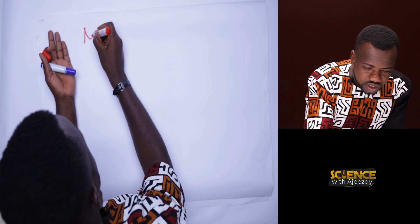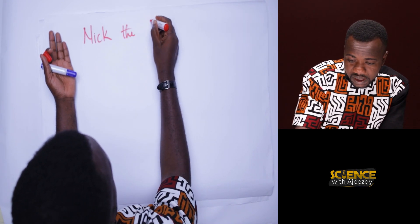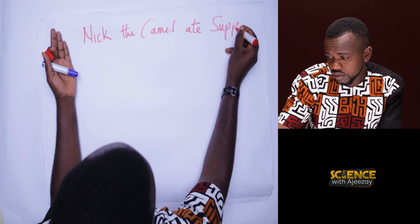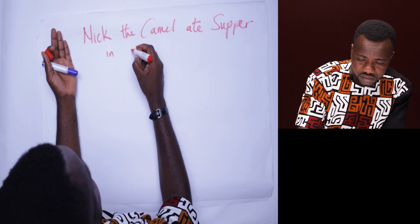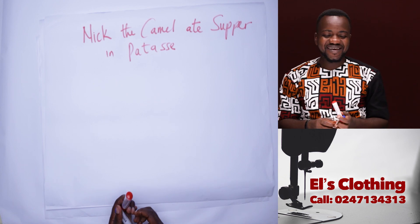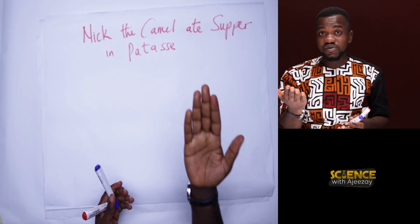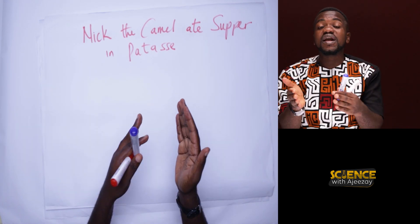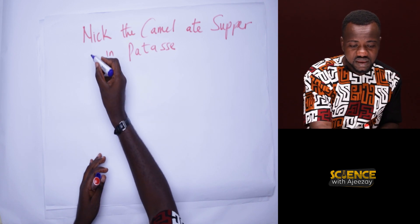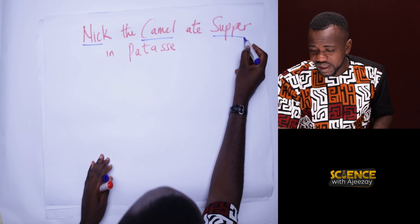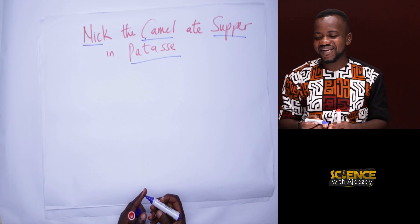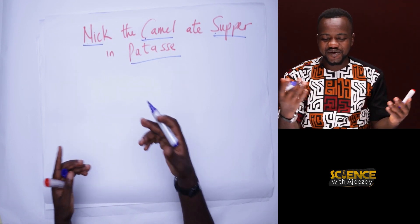Here is a short trick I use to remember the radicals: make the camel — it's supper in patasi. So we have NIC, CAMEL, SUPPER, PATASI. Our N is nitrogen, C is carbon, S is sulfur, and P is phosphorus. To use the trick, we look at vowels — A, E, I, O, U — and consonants in each word.